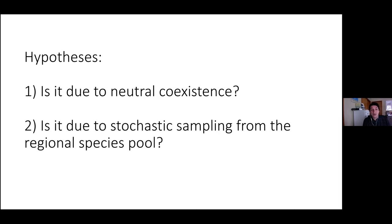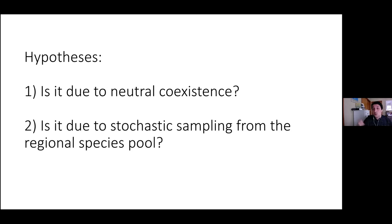The first hypothesis, which we proposed in our original paper, is that coexistence of multiple members within the same guild might be due to neutral processes — all members of the same functional guild might be equivalent in fitness and coexisting neutrally, giving rise to different members appearing in different communities. The second hypothesis is simpler: the reason we see different species in different habitats is because we are not sampling all species in all habitats when we inoculate from the regional species pool.